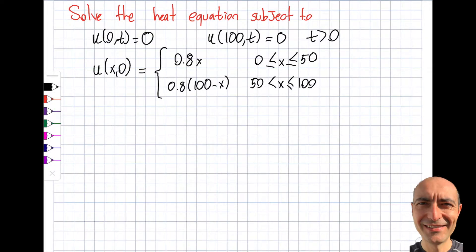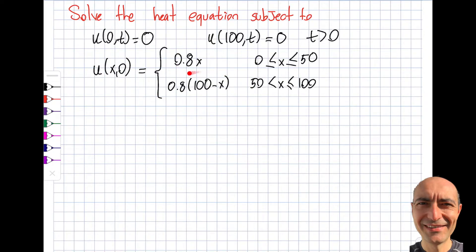Let's solve an example problem from the heat equation. The boundary conditions are: at the left-hand side of the rod the temperature is 0, and at the right-hand side it is 0. The initial condition at t=0 is piecewise: from 0 to 50 it's 0.8x, linearly increasing, and in the second half it goes down linearly from 80 as we move to the right.